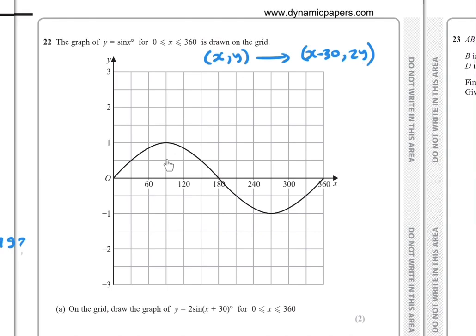Now if we start with this point x equals 90 and y equals 1, so 90 and 1, its image will be 60 and 2. So 60 and 2, so this is the new image.